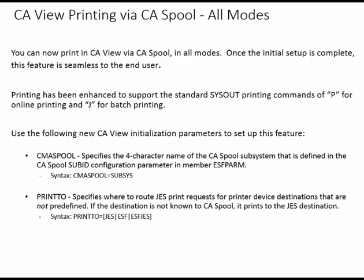Print 2 specifies where to route JES print requests for printer device destinations that are not predefined. If the destination is not known to CA Spool, it prints to the JES destination. Syntax is: Print 2 equals JES, ESF, or ESFJES.